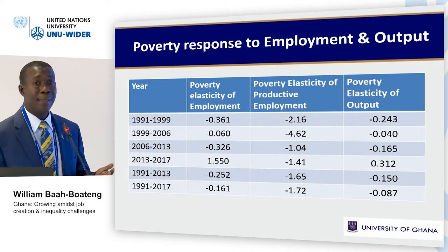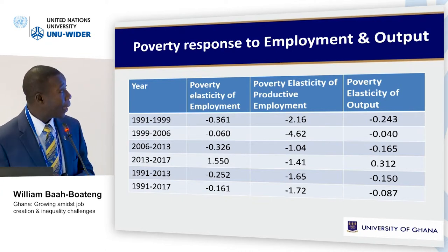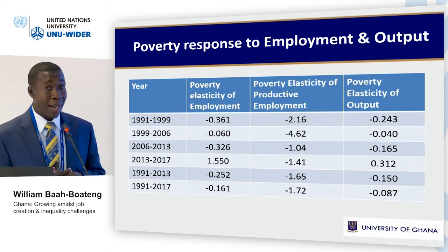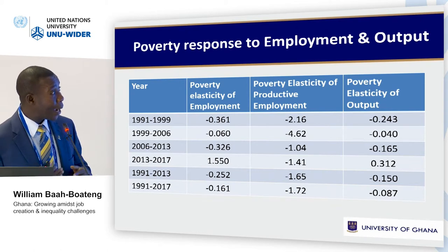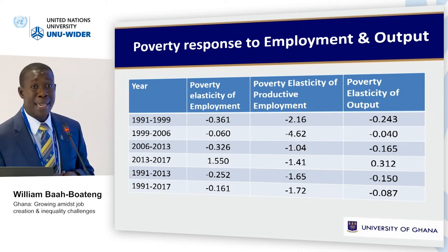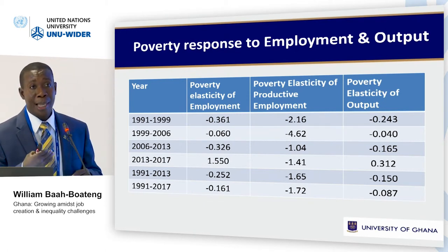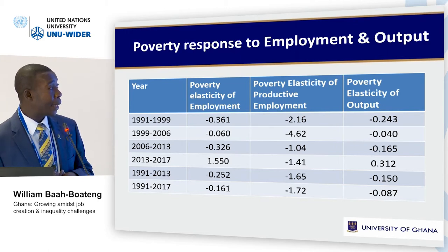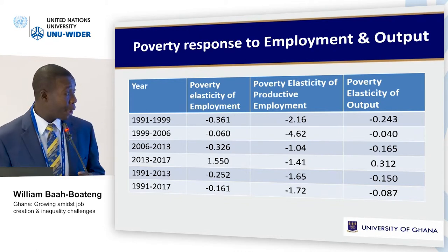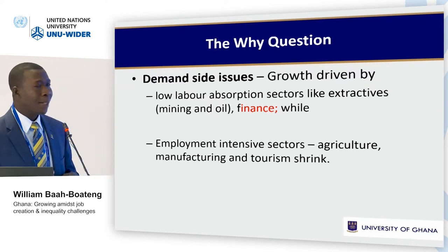Regarding poverty response to employment, if you have more productive employment you are bound to reduce poverty quite drastically, and that is why the elasticity is higher for productive employment. The poverty response to growth between 1991 and 2017 is 0.087. It used to be high between 1991 and 1999, went down in 1999 to 2006, appreciated between 2006 and 2013, and then the average from 1991 to 2017 is 0.087.